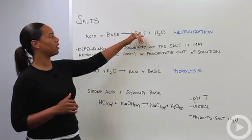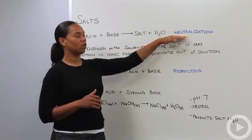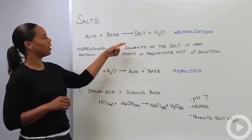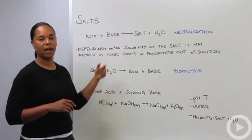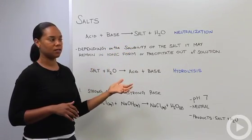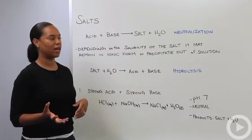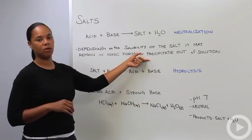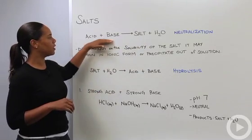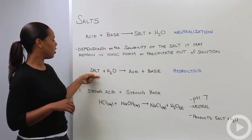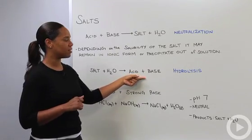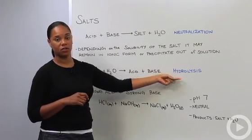An acid and a base forming salt and water is called a neutralization reaction. Depending on the solubility of the salt, it may either remain in its ionic form — as cations or anions — or precipitate out of solution. You can also have the reverse of this reaction occurring, where the salt and water go backwards to form back the acid and the base.